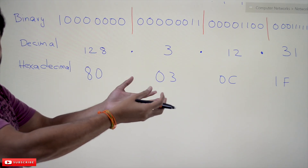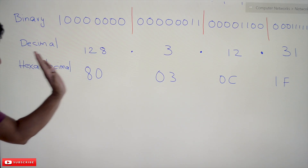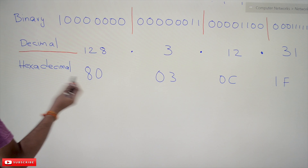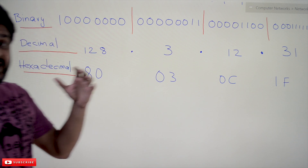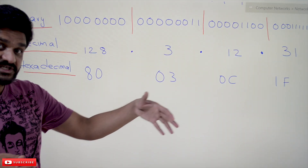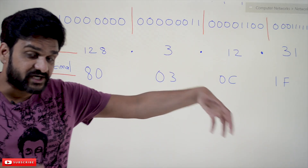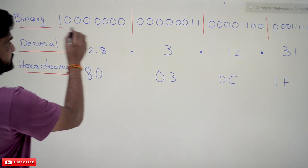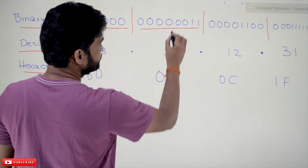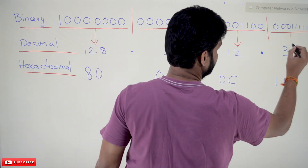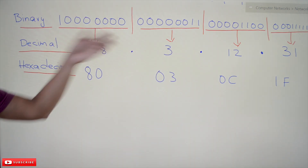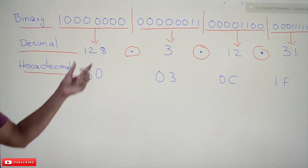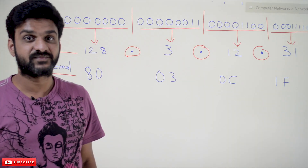An IP address can be notated in binary, decimal, or hexadecimal. In practice, the most common notation is decimal. The key point is how the 32-bit address is divided into four groups of 8 bits each. For example, the decimal value for the first group is 128, the second is 3, the third is 12, and the fourth is 31.